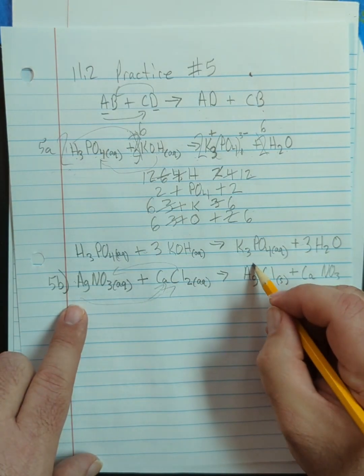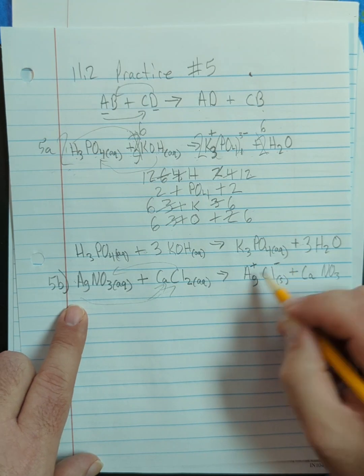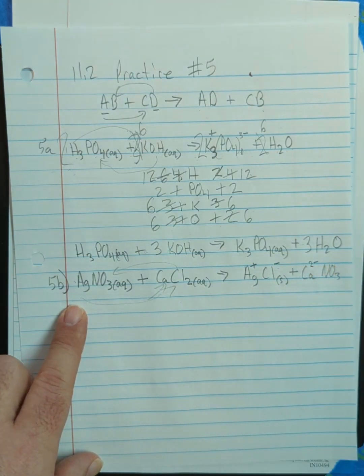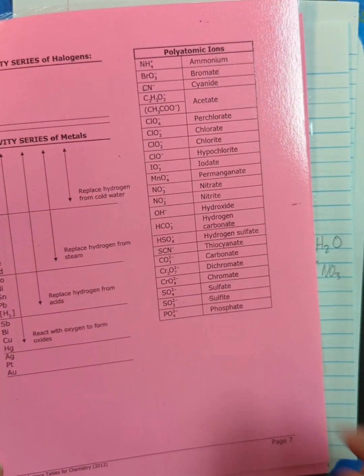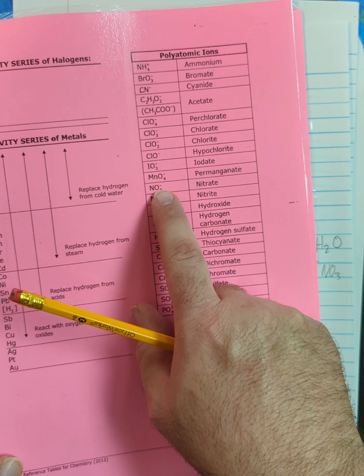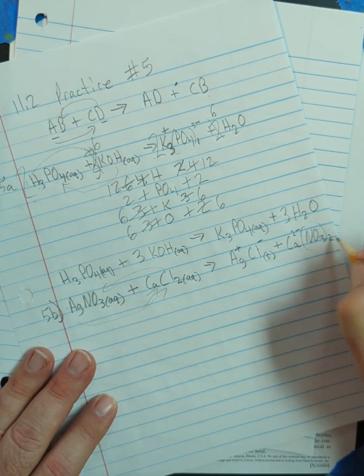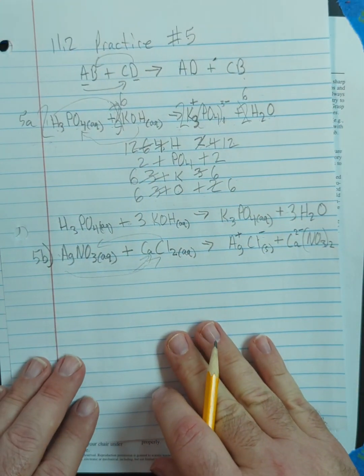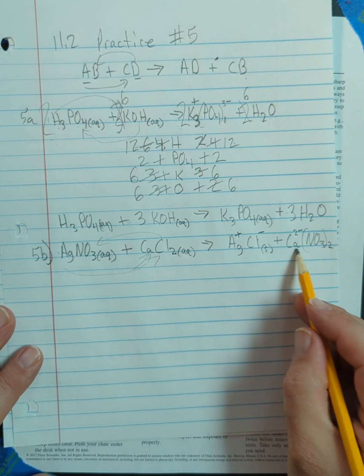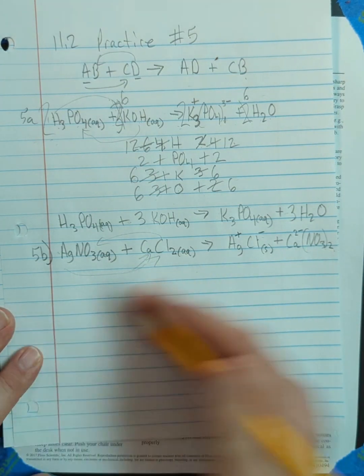Now, silver is usually a 1+, chlorine is 1-, so we're done with that one. Calcium is a 2+. If we look at our polyatomic ions, NO3 is a 1-, so that means I'm going to need two nitrates to balance out that calcium. So we'd have Ca(NO3)2. That's our formula.